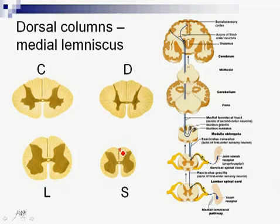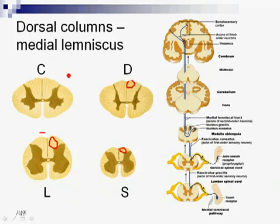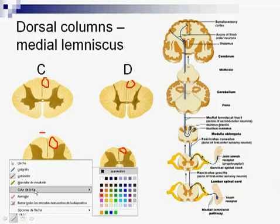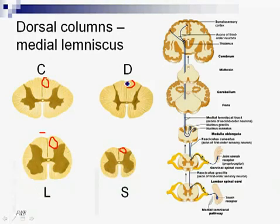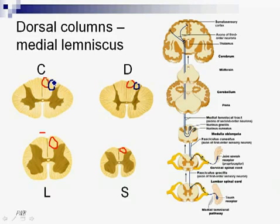In cross-sections at sacral and lumbar levels, on the dorsal side, we have only the gracilis fasciculus. At cervical and thoracic levels, we also have the cuneatus fasciculus. This is because the cuneatus fasciculus is formed by fibers coming from the upper trunk and upper limbs, whilst the gracilis fasciculus is formed by fibers from the lower trunk and lower limbs. Therefore, we can only see the cuneatus fasciculus from the thoracic level upwards.